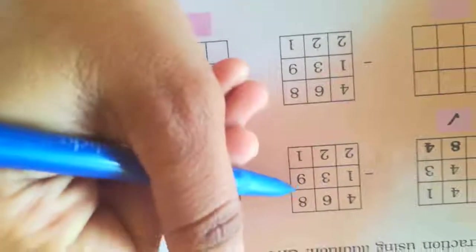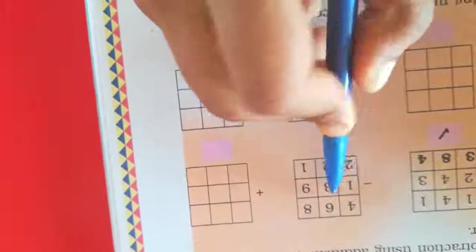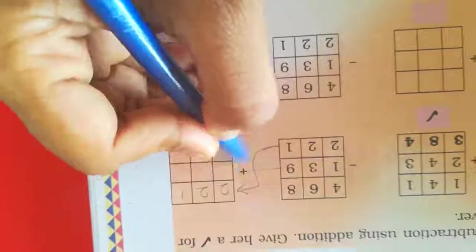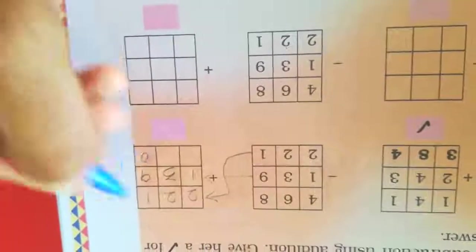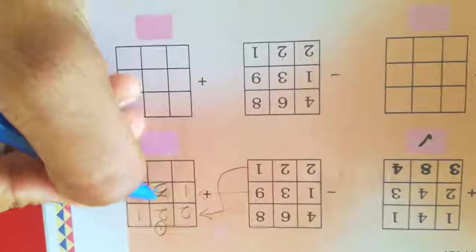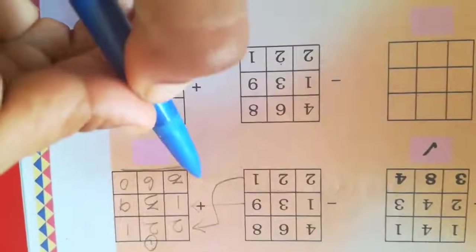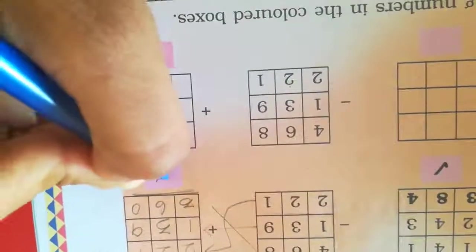Now look at the next page: Check Rashi's subtraction using addition. Give her a tick for every right answer. They've done 468 minus 139, and their answer is 221. Write the answer 221, then add the second number 139: 1 plus 9 is 10, carry 1; 2 plus 1 is 3, 3 plus 3 is 6; 2 plus 1 is 3. The result is 363, but 468 is different — they don't match, so put a crossbar.